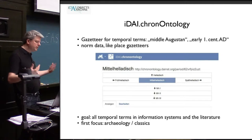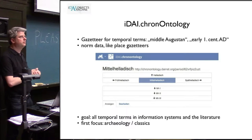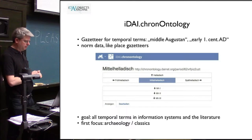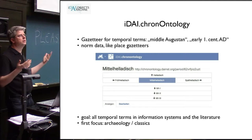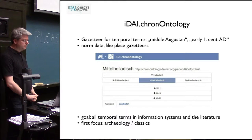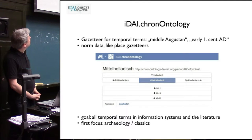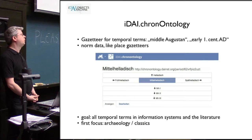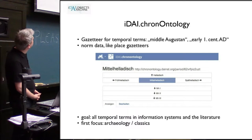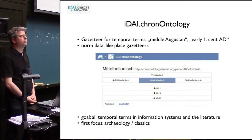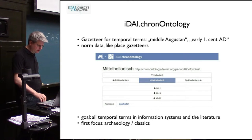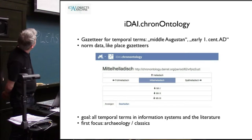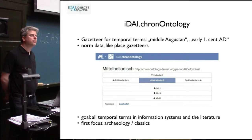In principle, a gazetteer for temporal terms is the same as a gazetteer for place names. It's norm data you can link to, and it is concerned with terms like 'Middle Augustan,' or also 'early first century AD.' The latter is more like a service because it's not really a temporal term, but 'Middle Augustan' definitely is.